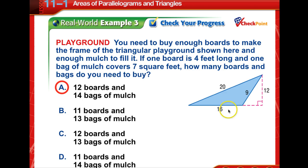Well, we know the perimeter is 20 plus 9 plus 16, which is 45. And if we take 45 and divide it by 4, we get 11.25. We have to round it up to 12 boards. The area is one half of this base of 16 times 12, which gives us 94 square feet. 94 divided by 7 gives us 13.71. So we round it up to 14 bags of mulch we need to buy.